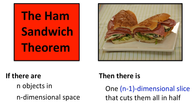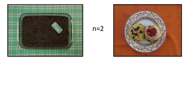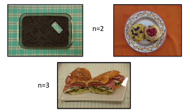All of these divisions are special cases of the ham sandwich theorem — and yes, it's really called that. The theorem says that if you have n objects in n-dimensional space, there is an n-1 dimensional plane which divides each of the n objects in half. The pancakes and brownies are just special cases with n equals 2, while the sandwich works with n equals 3.